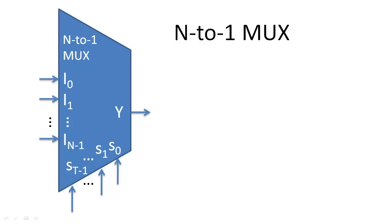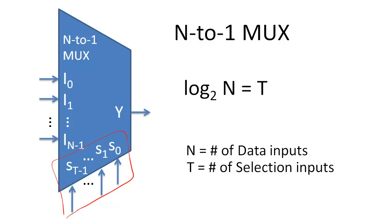An N to 1 multiplexer selects one data input to send to the output by encoding the data input's index with a binary number within the selection inputs. Therefore, a multiplexer needs a minimum number of selection inputs based on the number of data inputs.